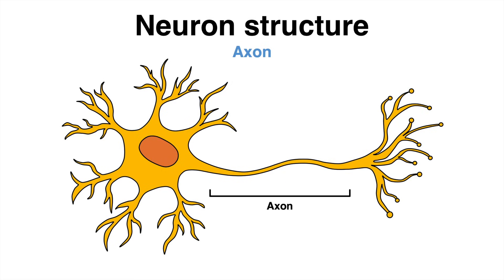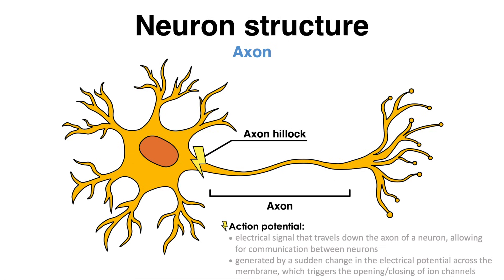The axon is a long, thin projection that carries electrical signals away from the cell body to other neurons, muscle cells, or glands. The first part of the axon is named the axon hillock, which is also the starting point for any action potential.